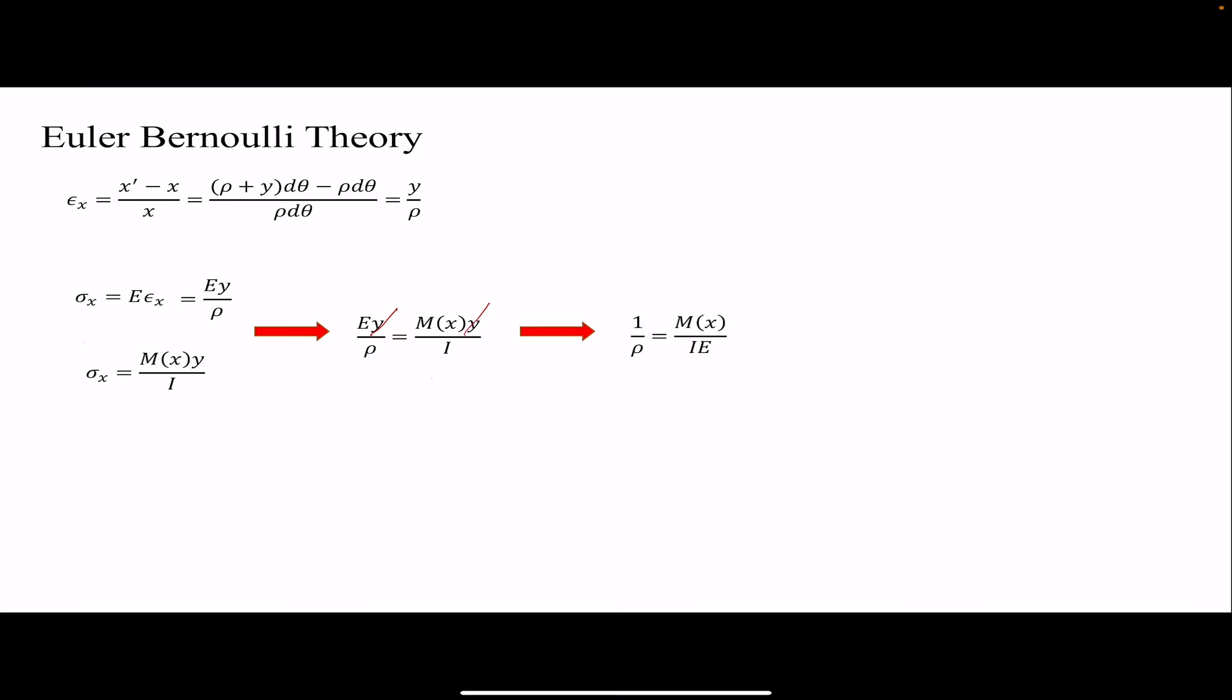And rho is the radius of the curvature, so it depends on the geometry. Mathematically, we can find it based on the deflection. So that's the accurate equation for radius of curvature. But we can further simplify that. If the slope is small, then slope squared would be negligible. So that would be zero. That means that the whole denominator would be 1. So 1 over rho would be the second derivative of our deflection. If I set these two equations the same, I can find the beam theory.